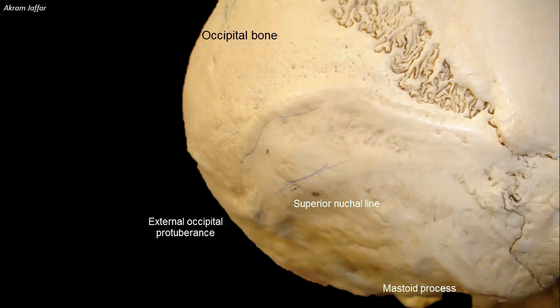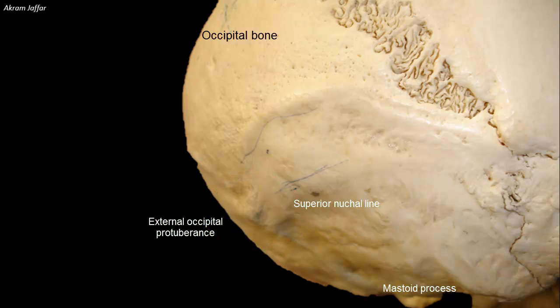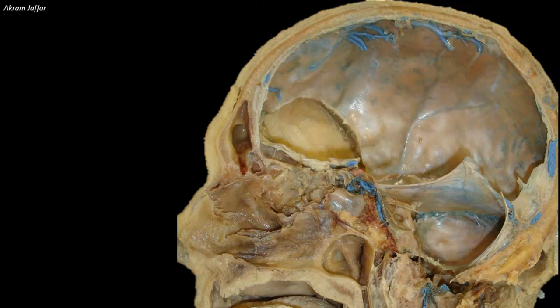This is a lateral view, again showing the external occipital protuberance and the superior nuchal line. The superior nuchal line marks the junction of the neck and scalp. It is also the surface marking of the attachment of the tentorium cerebelli and the transverse venous sinus on the inside of the skull.